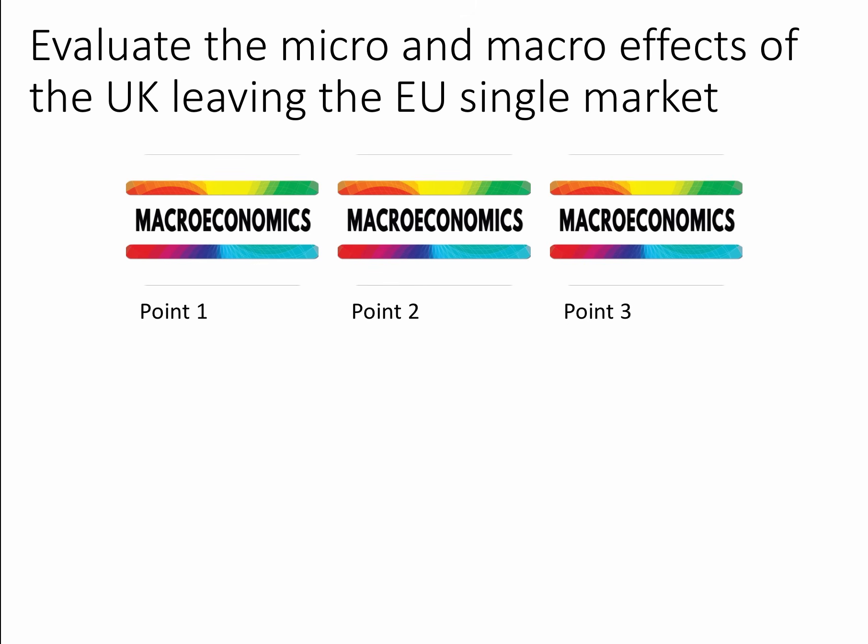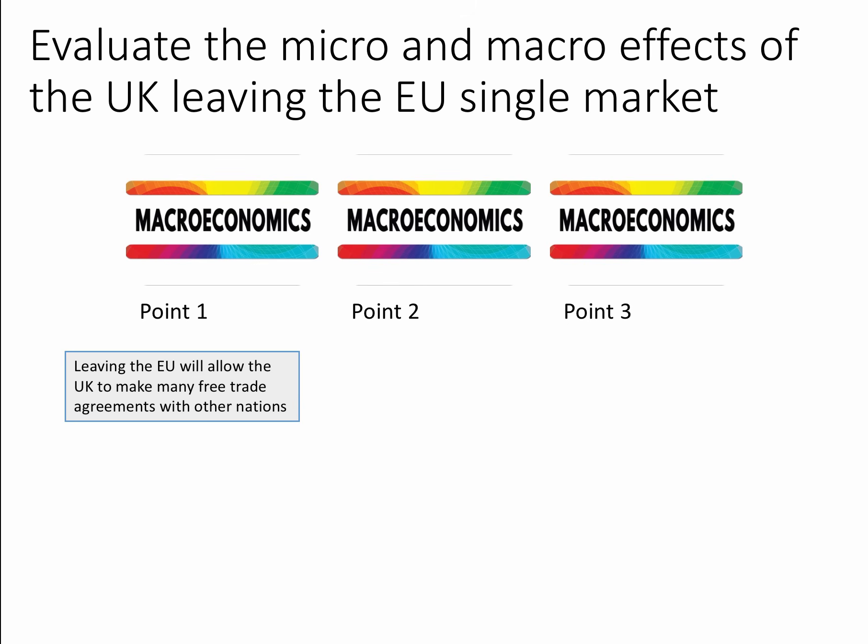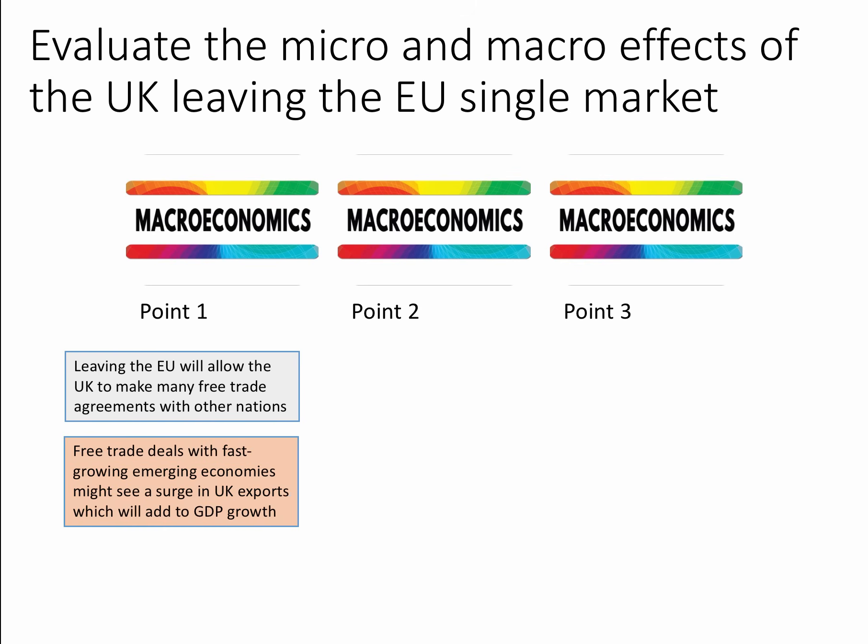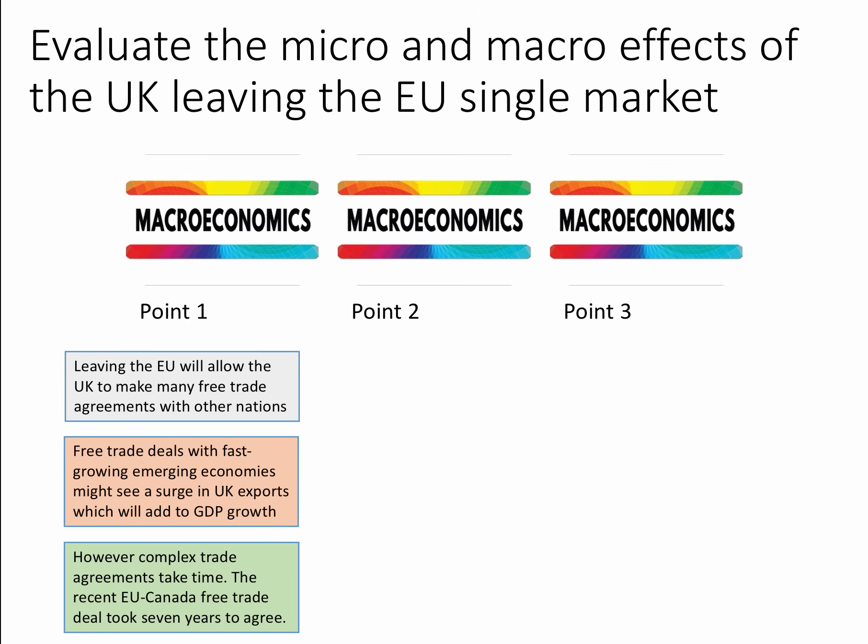Now let's turn to some macro effects. My first macro point: leaving the EU will allow the UK to make many free trade agreements with other nations. This opens the door to free trade deals with fast-growing emerging countries — China, India, for example — which might see a surge in UK exports, adding to GDP growth. However, complex trade agreements take time. The recent EU-Canada free trade deal took seven years to fully agree, so the idea that we're suddenly going to enter a brave new world of free trade deals is perhaps a little optimistic.